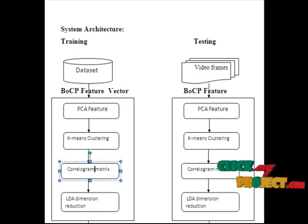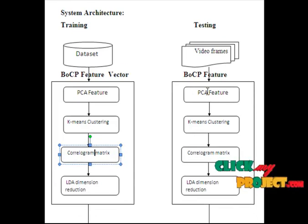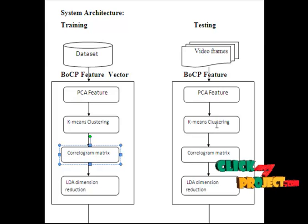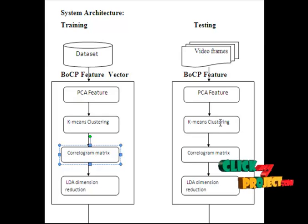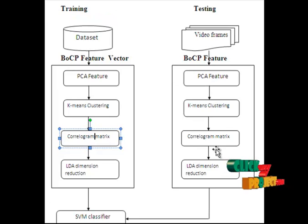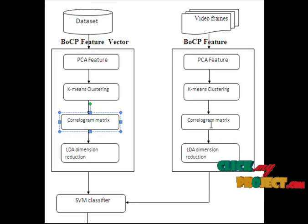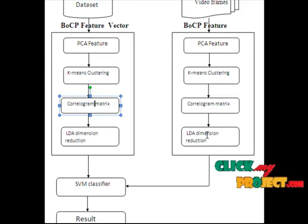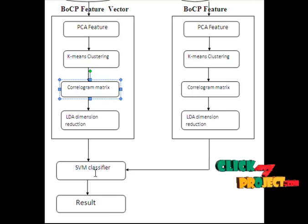After training, we move to the testing stage. Initially we provide the video frames, which are passed to PCA feature extraction. After extracting the PCA features, they go to the clustering part, where features are clustered as a set of partitions. The clustering values are passed to the correlogram matrix, and then LDA dimension reduction is applied, reducing the correlogram matrix. After extracting the features, they go to the SVM classifier. The SVM classifier predicts the result of the feature, and finally we get the result.